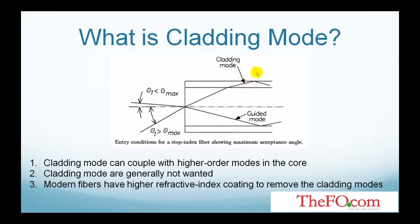The cladding has an interface with the outer coating layer. Some of this light will be reflected back into the cladding at the cladding and coating interface, and it can then be trapped and propagate within the cladding. These are called cladding modes, and they are also called radiation modes.